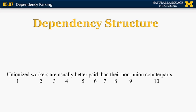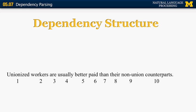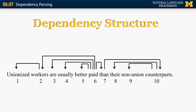Let's look at a more complicated sentence: 'Unionized workers are usually better paid than their non-union counterparts.' We build a structure based on dependencies between words. The word 'paid' is the most important word — the main predicate. Its subject is 'workers,' so there is a dependency between 'paid' and 'workers' with 'paid' as the head. 'Workers' is modified by 'unionized.' You can fill out the entire chart, and 'paid' has no parent because it's the root of the sentence.